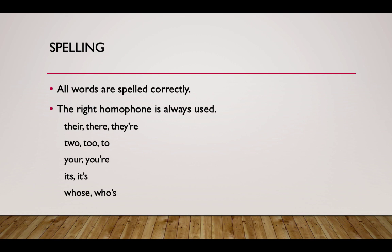Also: two, to, and too; your and you're; its and it's; whose and who's. Remember for its and whose, the apostrophe is only used when you're trying to say 'it is' or 'who is.' When you're showing that they own something, that's the only time you don't use the apostrophe. Make sure you use the right homophone and that your partner did all these things correctly.